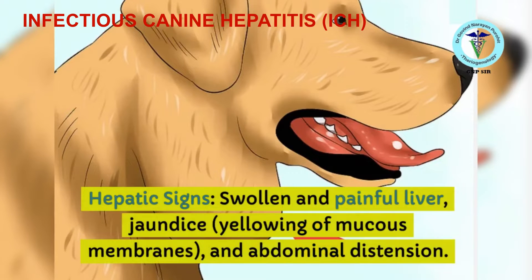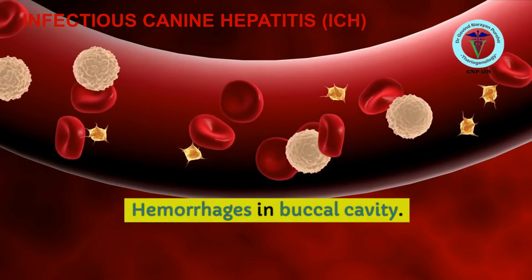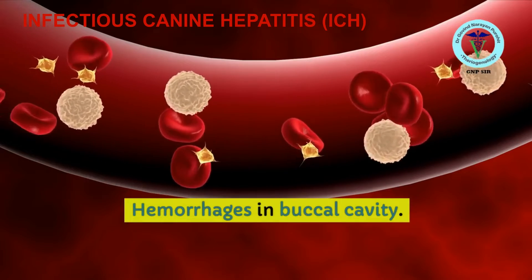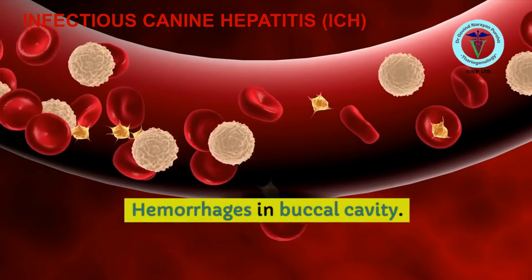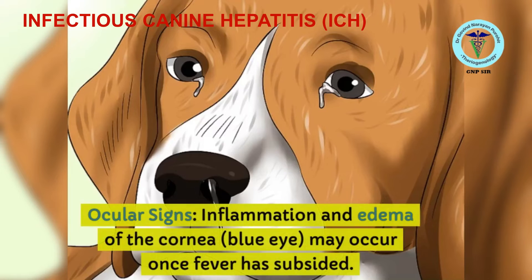Hepatic signs include a swollen and painful liver, jaundice, yellowing of mucous membranes, abdominal distension, and sometimes edema at the neck. The dog may also show hemorrhages in the buccal cavity, which can be very disturbing for the owner.